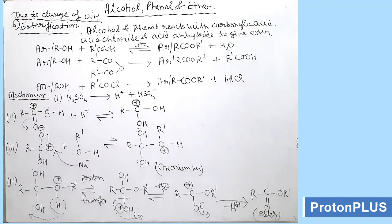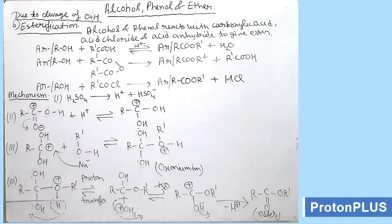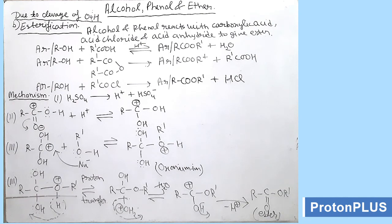In the third step, in this oxonium ion RC(OH)(OHR'), the oxygen is carrying a positive charge. To remove this positive charge, there will be a proton transfer from this oxygen atom. This H+ will be transferred to any of the OH groups, each having two lone pairs. This H+ goes to the OH group and the bond formed is OH2+. This OH2+ oxygen is again positively charged, so the C-O bond will cleave.